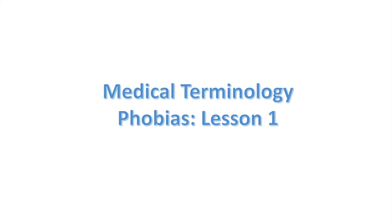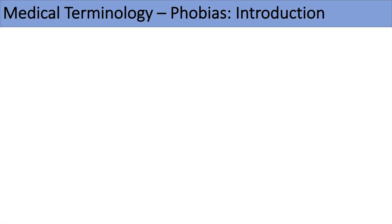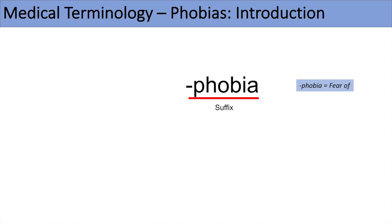Hey everyone, here is lesson one of phobia medical terminology. In this lesson we're going to go through a large list of different types of phobias. You're going to learn a lot of different medical terms for specific types of phobias many people suffer from. To start, we'll first introduce what the suffix phobia actually means. The suffix phobia means 'fear of,' and it can be added to many different prefixes to form a specific type of phobia.